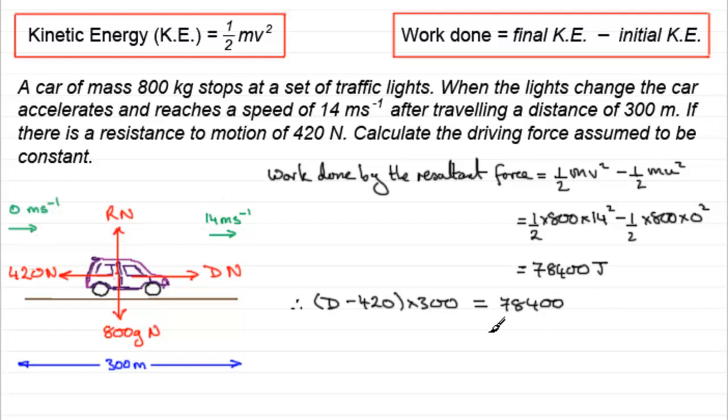So all we've got to do is rearrange this for d. We could divide both sides by 300, that will give us d minus 420, and then add on the 420. So d equals 78,400 divided by 300 and then add on the 420. If you do that, you'll find that you get 681.3 recurring. And if we were to round that to three significant figures, it would be 681 newtons.